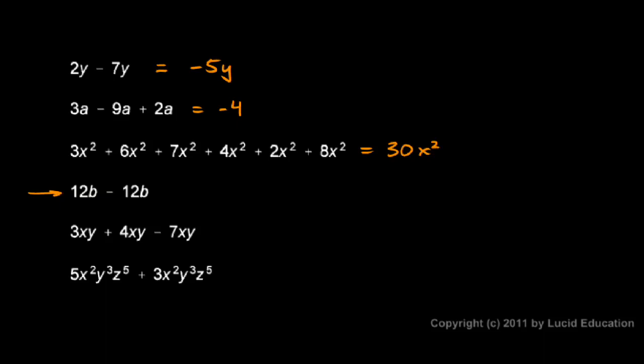Now this one, 12b minus 12b, that ends up being 0. I have one thing minus that same thing, 12b minus 12b. If you wanted to, you could think of this as 12b minus 12b is 0b, but this 0b, 0 times b, is just the same as 0.